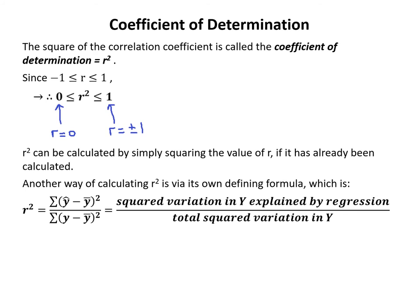The square of the correlation coefficient is called the coefficient of determination, r-squared. Since r is between -1 and 1, r-squared must be between 0 and 1. If r is zero, r-squared is zero; if r is plus or minus 1, r-squared equals its maximum of 1. The defining formula for r-squared is: the sum of (y-hat minus y-bar) squared divided by the sum of (y minus y-bar) squared — that is, the squared variation in y explained by the regression divided by the total squared variation in y.